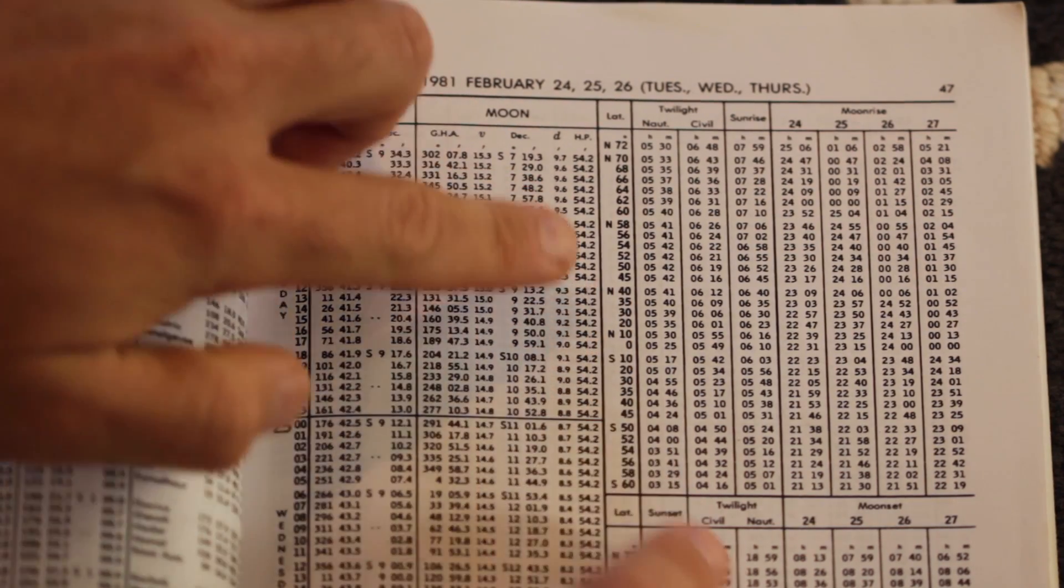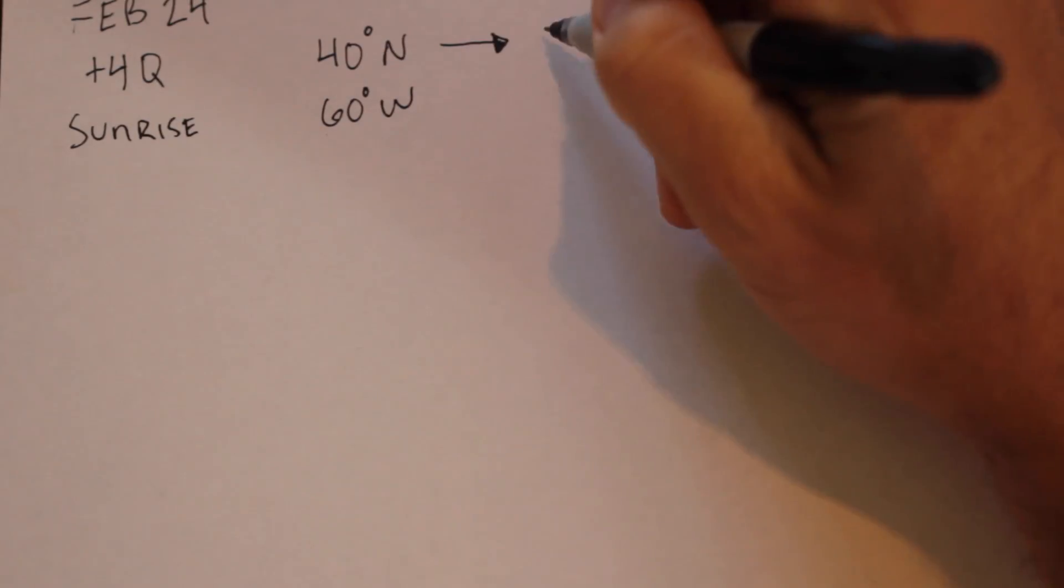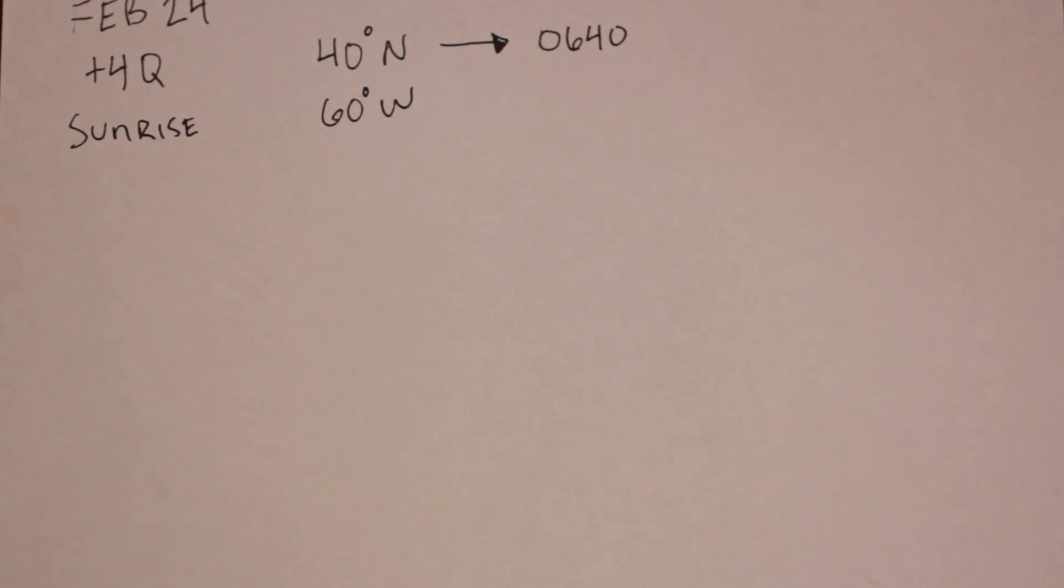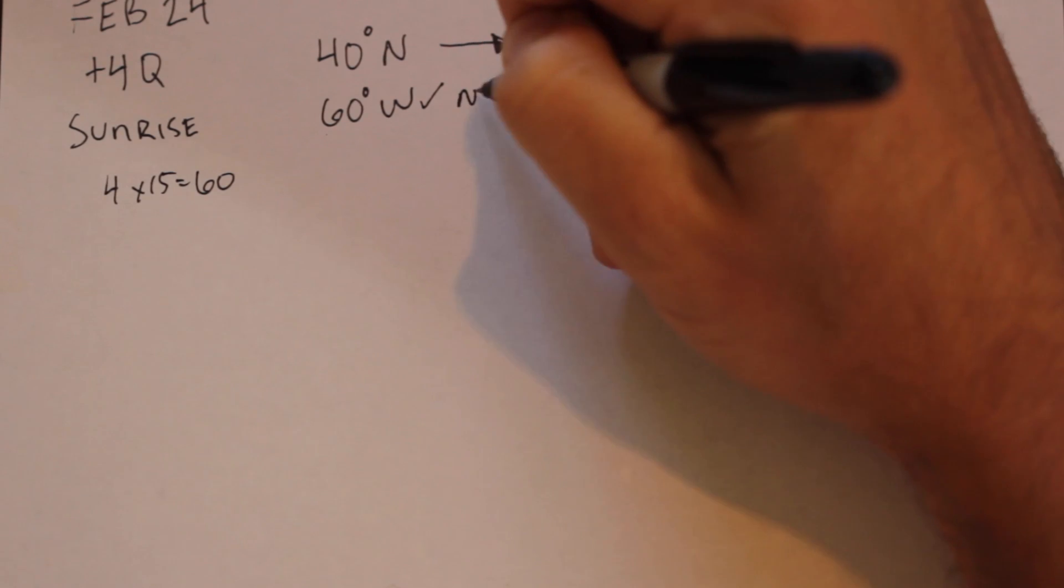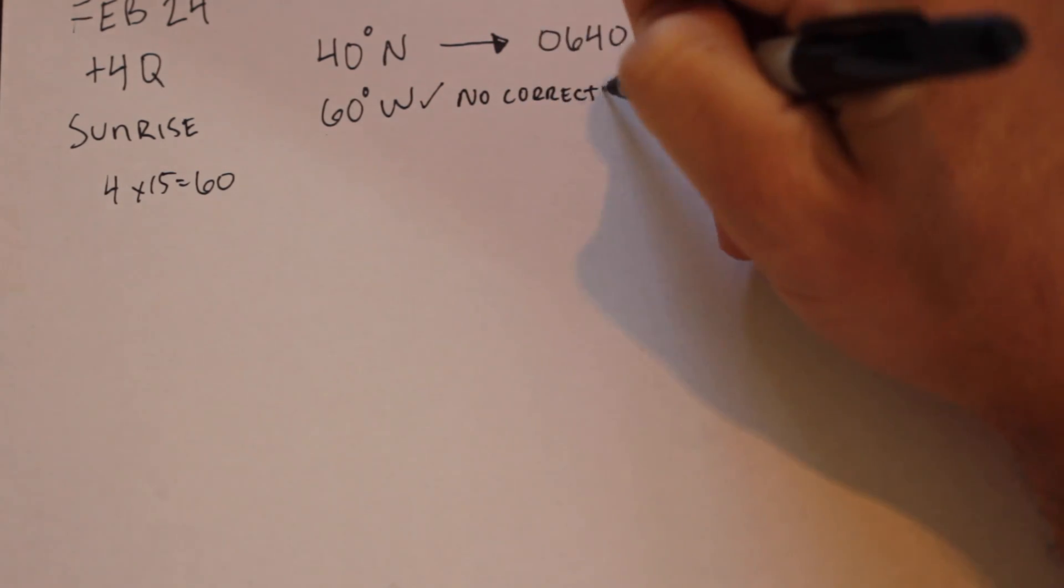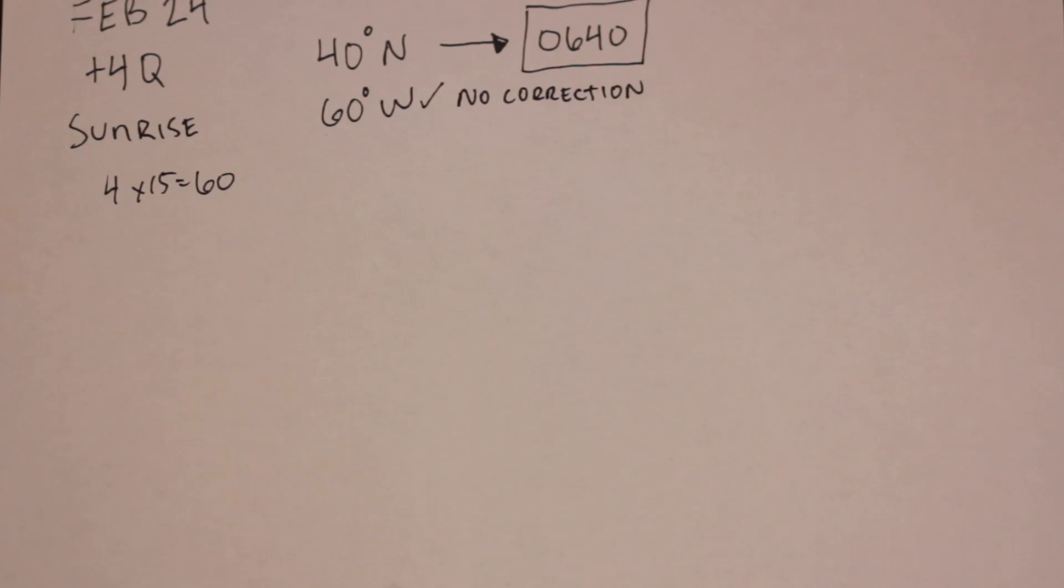Next, we need to correct for longitude. Since we are observing plus 4 Quebec, and standard meridians are every 15 degrees apart, we can deduce that plus 4 Quebec corresponds to 60 degrees west. Since we are at 60 degrees west, no correction is necessary, and the final time of sunrise is 0640.